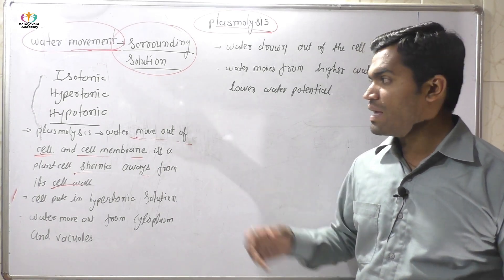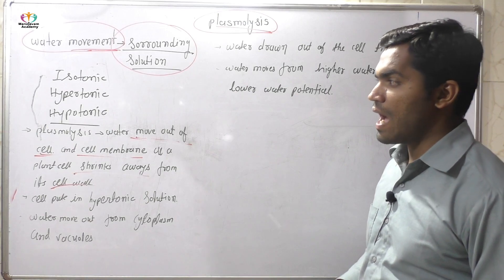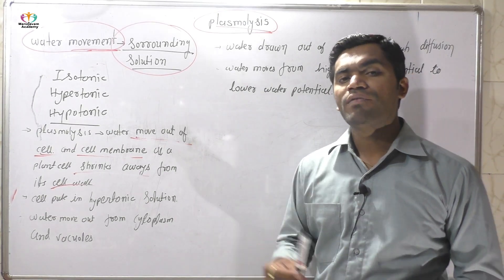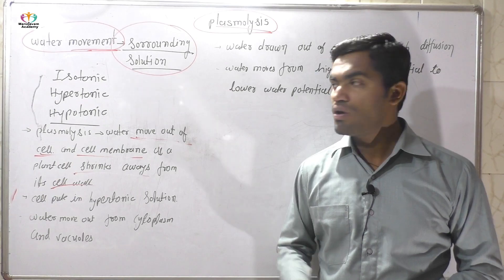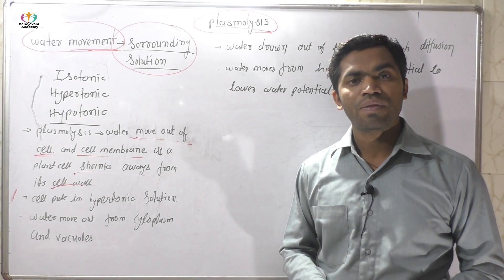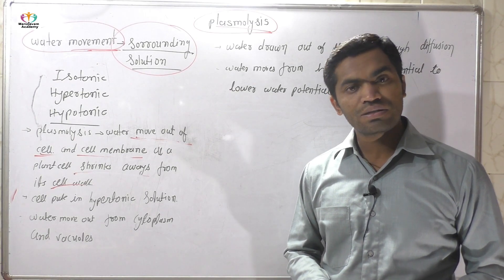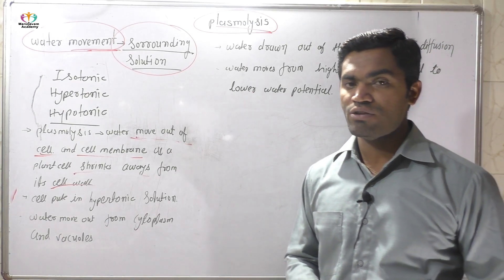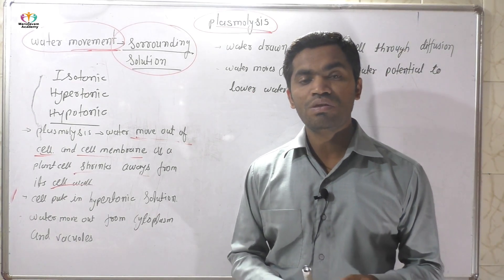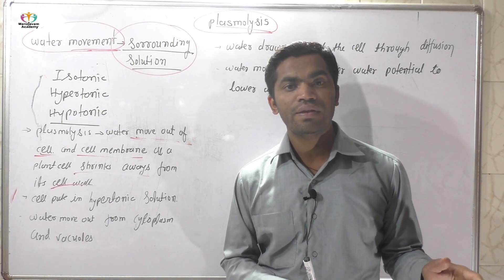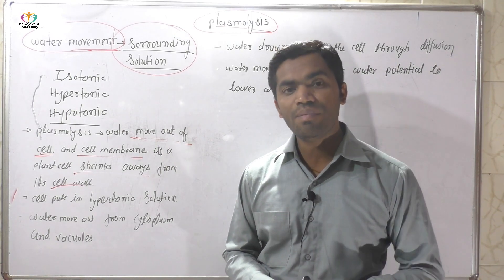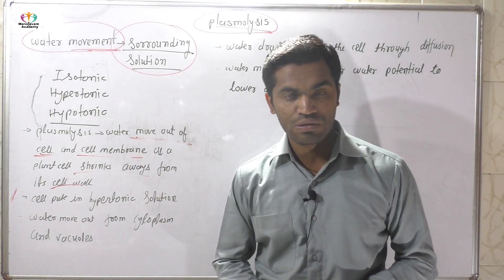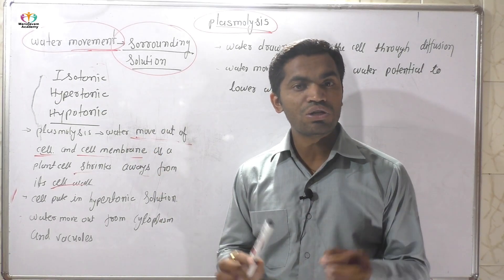In the previous lecture we discussed isotonic solution, hypotonic solution, and hypertonic solution. The first definition: isotonic solution — when the concentration of the cytoplasm is similar to the concentration of the solution outside the cell, that solution is called an isotonic solution.